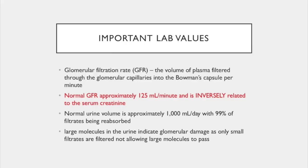The GFR is the volume of plasma filtered through the glomerular capillaries into the Bowman's capsule per minute. Normal GFR is approximately 125 mL per minute and is inversely related to serum creatinine — as creatinine rises, GFR drops. Normal urine volume is approximately 1,000 mL per day, with 99% of filtrates being reabsorbed. Large molecules in the urine indicate glomerular damage, as the glomerular membrane is a tight-knit membrane that normally only allows small filtrates to pass.